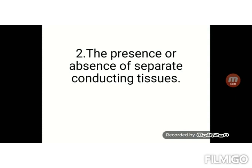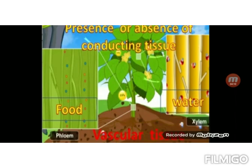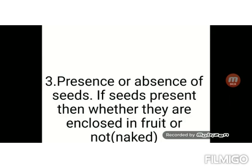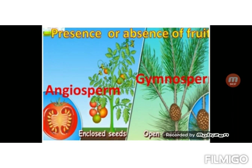The second criteria is the presence or absence of separate conducting tissues. Plants have two conducting tissues: xylem, which conducts water, and phloem, which conducts food. The third criteria is the presence or absence of seeds. If seeds are present, then whether they are enclosed in a fruit or not is the next criteria for classification of plants.